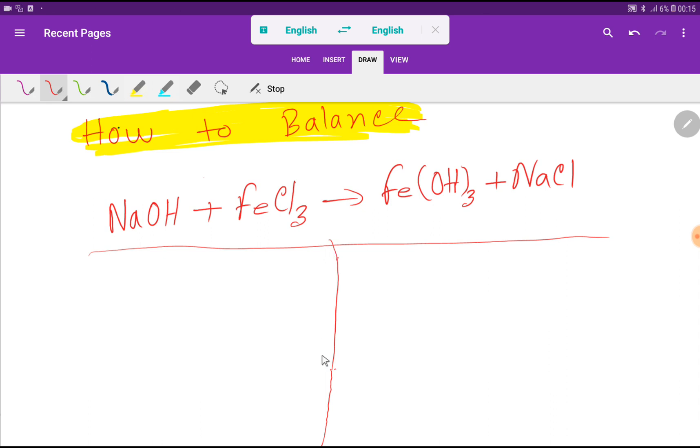at first I have to draw a table like this. Then I have to count the number of atoms and polyatomic ions.